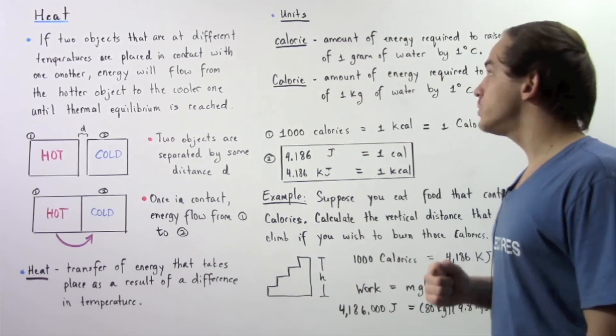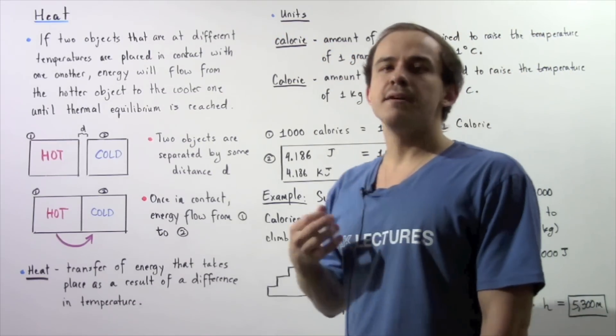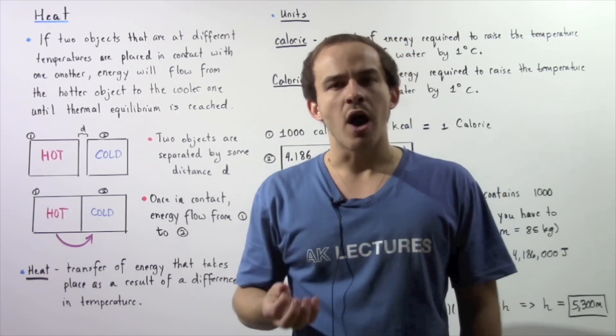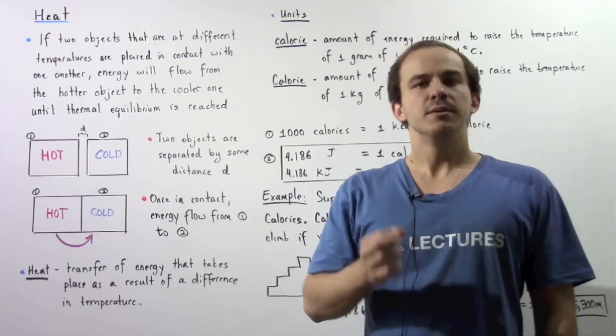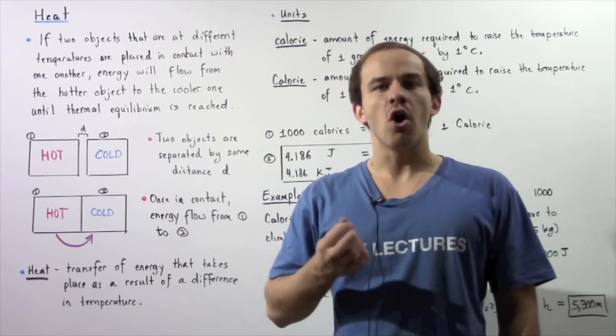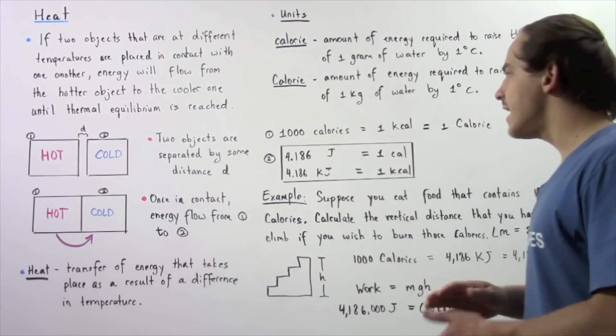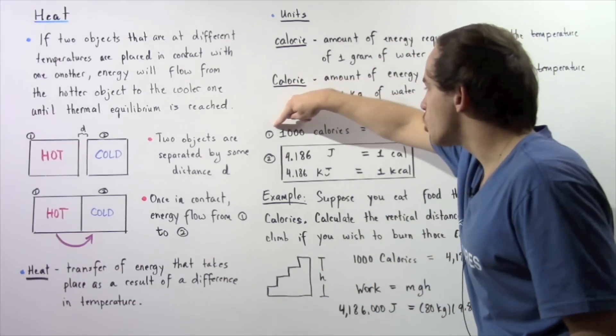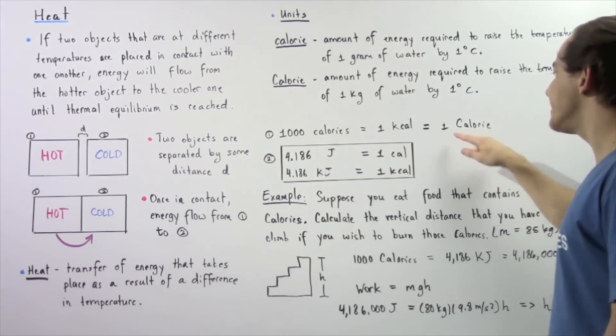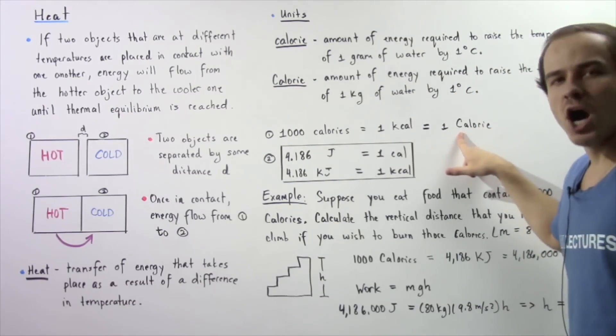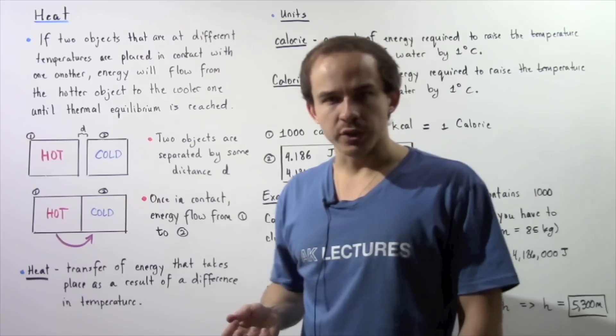We define something known as a Calorie with an uppercase C as the amount of energy required to increase the temperature of one kilogram of water by one degree Celsius, also from 14.5 to 15.5 degrees Celsius. So that means 1000 calories is equal to one Calorie with the uppercase C. So 1000 calories is simply one kilocalorie.